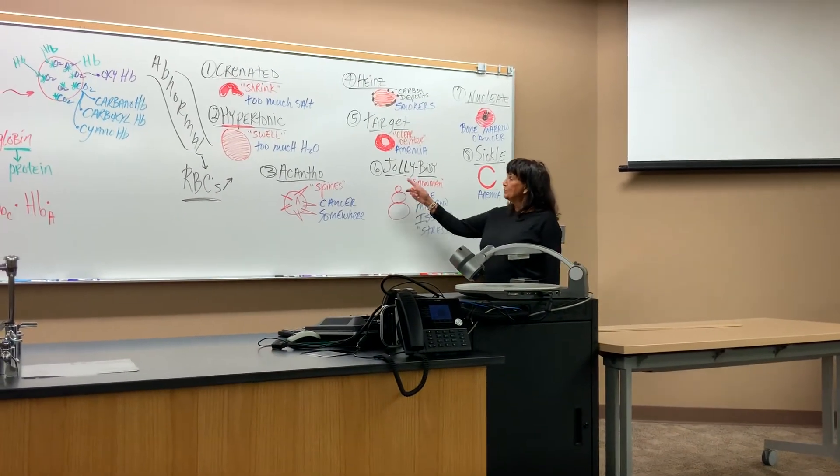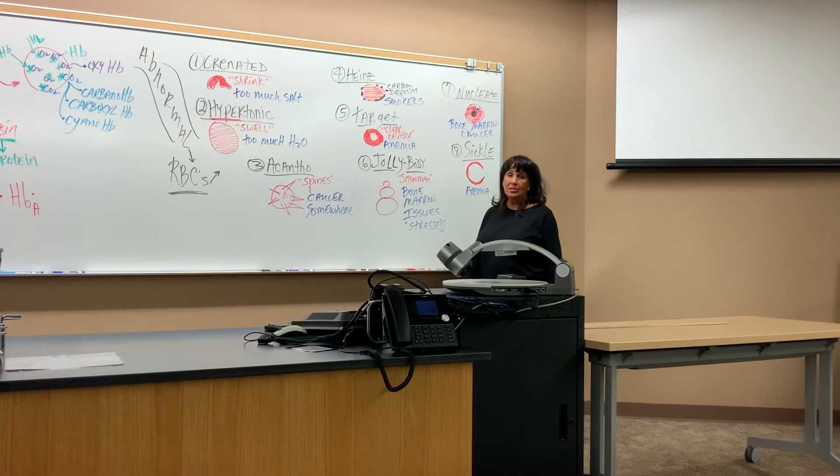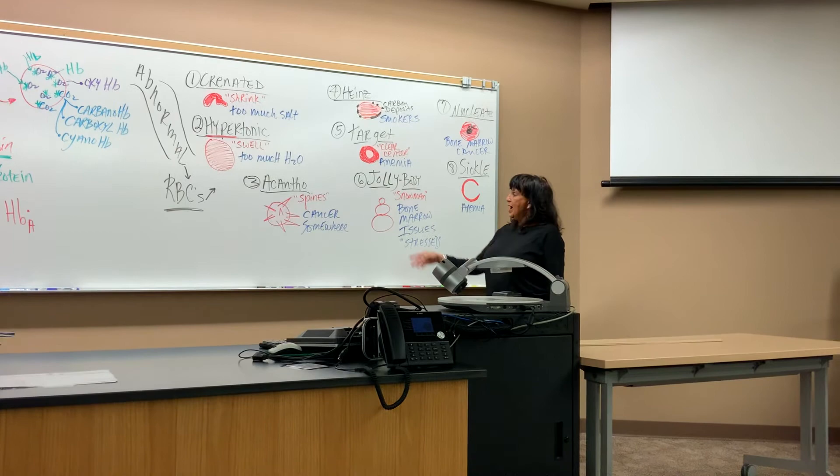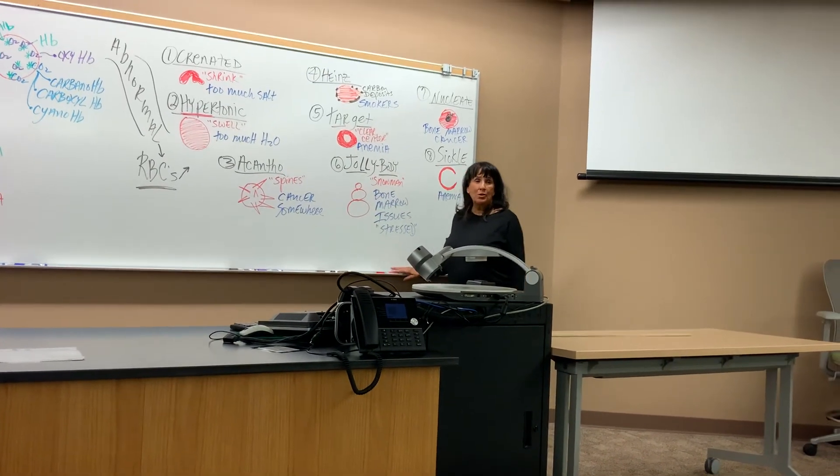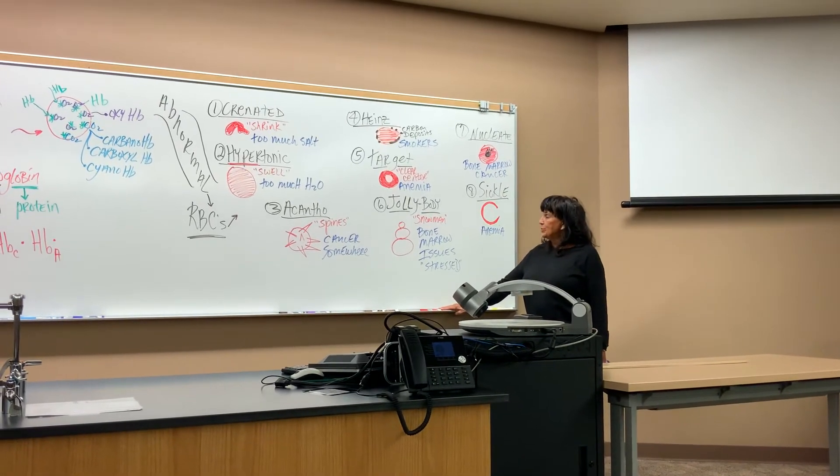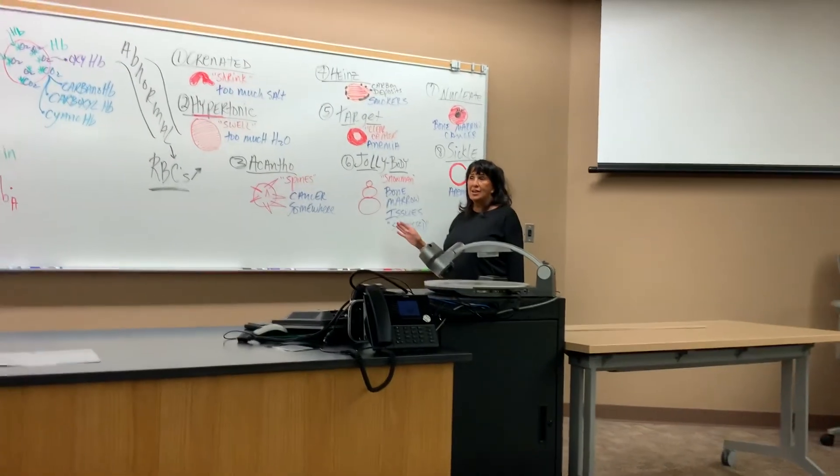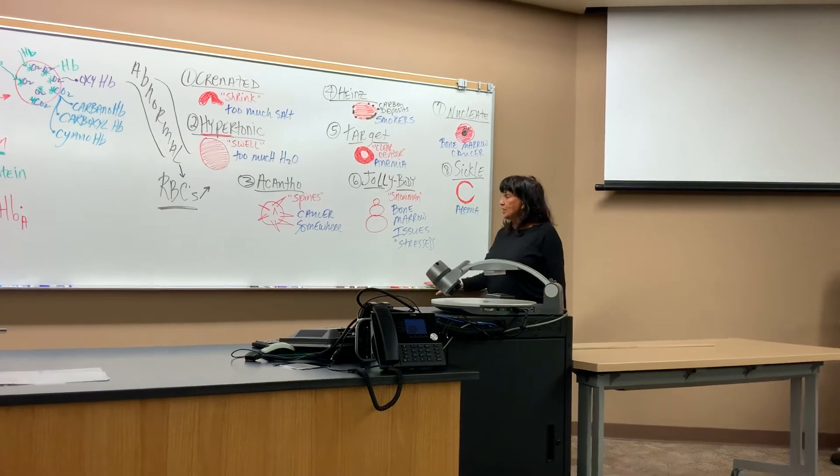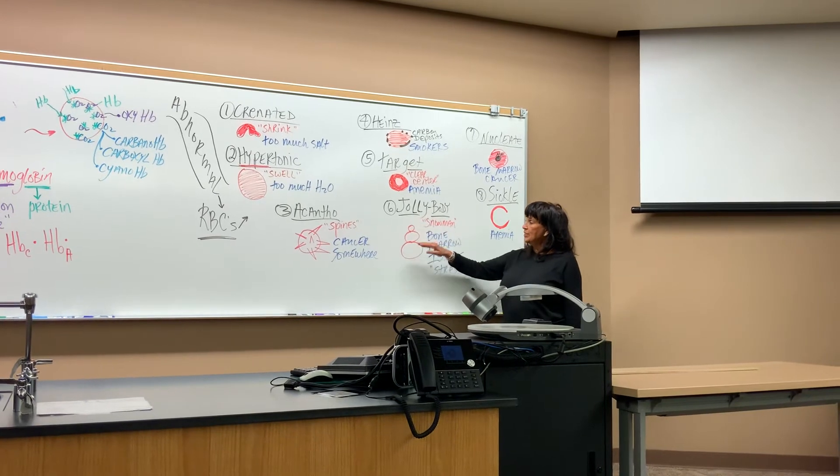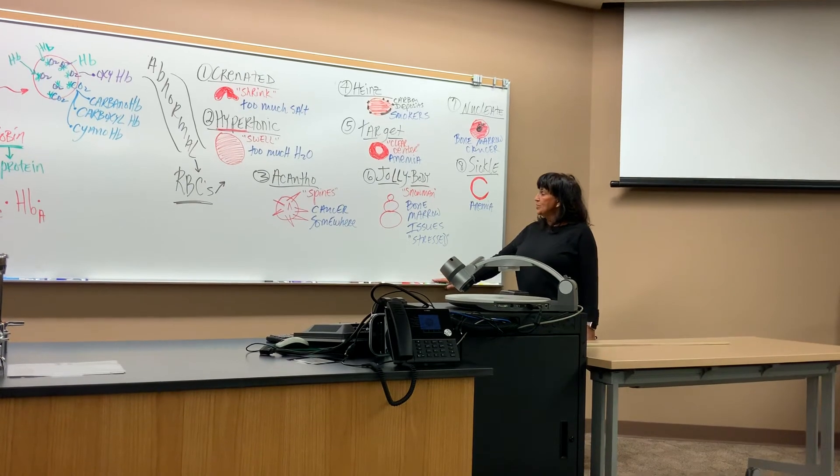The next one is a fun one, Jolly Body. The Jolly Body has three different sizes of red blood cells stuck together. No red blood cells should be sticking to each other. That just means you have some bone marrow problems in the formation and production and release of your red blood cells. Your bone marrow could be stressed because it's not getting fed well or it has some abnormal activity going on. The blood cells aren't separated and they're three different sizes and they sort of look like a snowman. That means bone marrow issues.